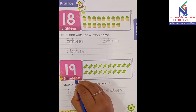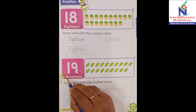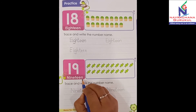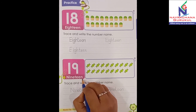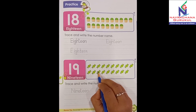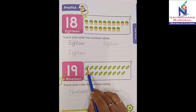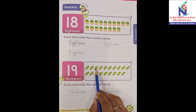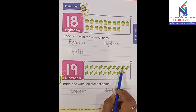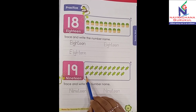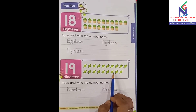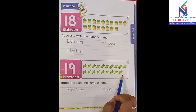Now let's check out number 19. N-I-N-E-T-E-E-N, 19. These are chocolates. Let's count: 1, 2, 3, 4, 5, 6, 7, 8, 9, 10, 11, 12, 13, 14, 15, 16, 17, 18, and 19.